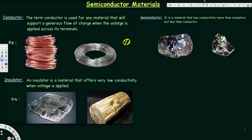For the conductor, I've taken two examples: copper wire and aluminum wire. If we cut this copper wire, that's going to be a circle, and the area of the circle is πr². We have to see the amount of current flowing through this cross-sectional area in the given time, and it's going to be very high for the conductor. That's the definition: the flow of charge is very high when voltage is applied across the terminals.